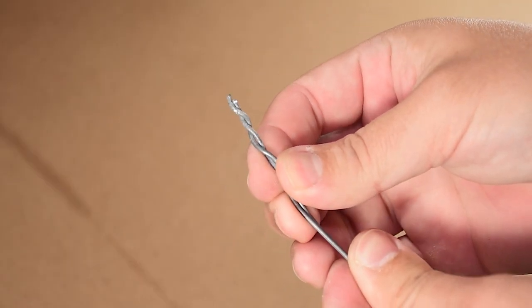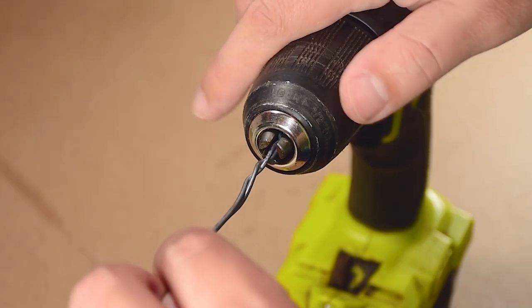First we take two pieces of wire and twist them together. This way the wire will be much stronger.